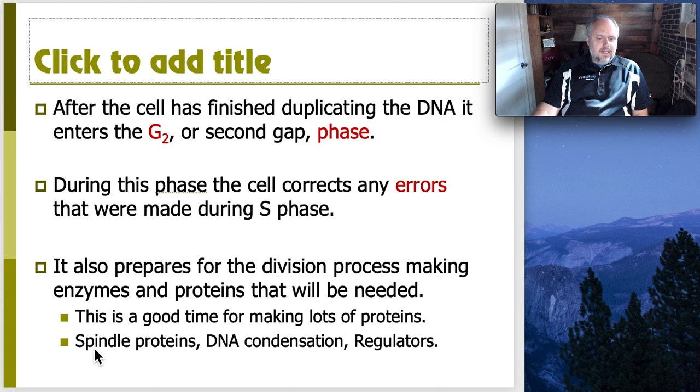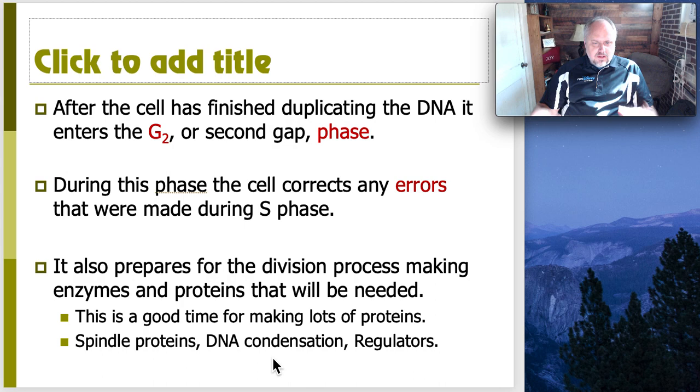This is really a good time for making stuff. And things that we would probably be making at this point would be the spindle proteins. Remember, the cytoskeleton is going to be very much involved in separating our DNA chromosomes. The DNA has to condense and obviously we didn't really need any regulators for mitosis or meiosis until now. So we usually wait until now to make them.